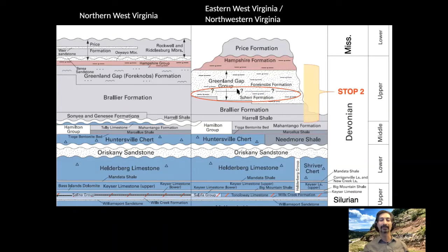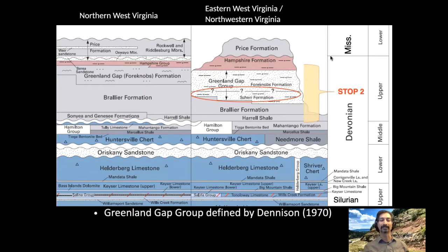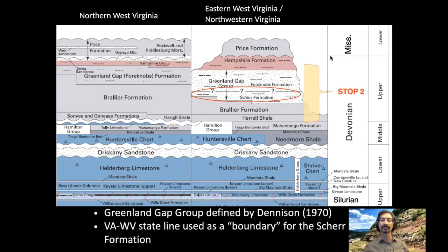The reason that question mark is there involves a couple of issues. The first reason is that when the Greenland Gap Group was first defined by John Dennison in 1970, he had used the Virginia–West Virginia state line as something of an arbitrary boundary for where the Shear Formation was actually recognizable. For someone like me who maps across state lines, that presents a problem when you're trying to make a seamless geologic map — we can't have a state line as a fault.